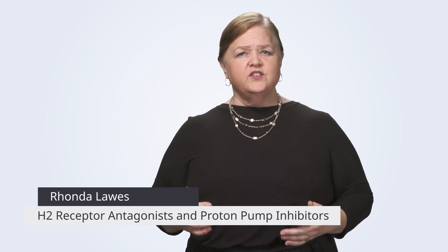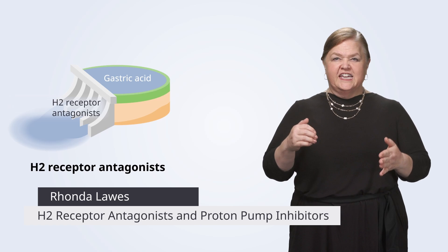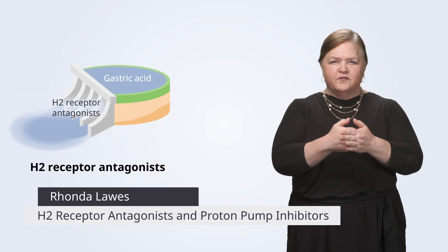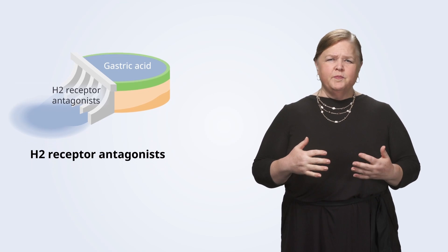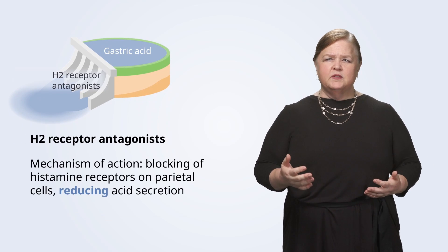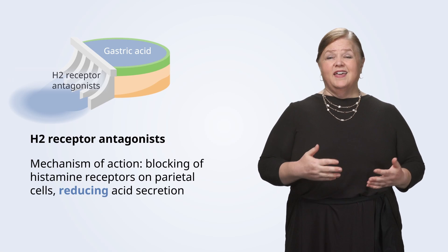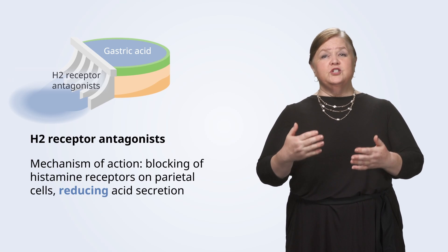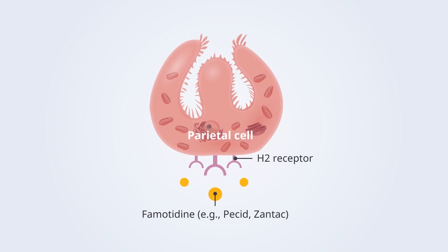Second on our list, we have H2 receptor antagonists. Imagine these as a dam blocking the flow of acid production. They work by blocking histamine receptors on the parietal cells, which ends up reducing acid secretion.